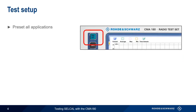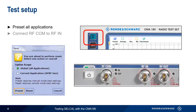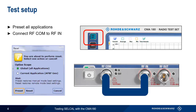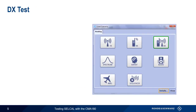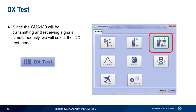We'll prepare our CMA 180 by first using the green preset button and a global preset to return the CMA 180 to its default state. We'll then create an RF loopback by connecting RF COM to RF IN on the front of the CMA 180. Since the CMA 180 will be transmitting and receiving signals simultaneously, we'll select the DX Test Mode from the Analog Scenario menu.